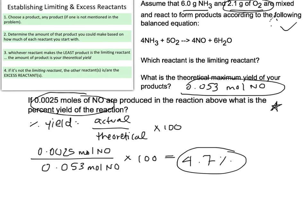Two major features to remember when calculating percent yield: first, make sure your units are the same — moles and moles, or grams and grams; it doesn't matter, but the units on both actual and theoretical amounts must be exactly the same. Also, the substance you're plugging in must be the same — you can't have O2 in one place and NO in the other. Make sure you do the multiplication by 100, as that's what gives you the percentage.